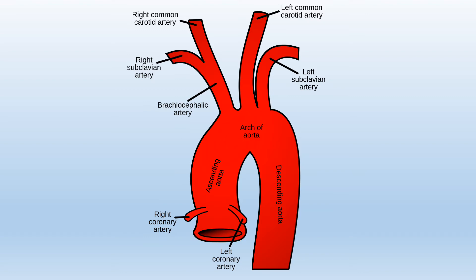The ascending aorta arises from the left ventricle and ascends to become the aortic arch. It is two inches long and travels with the pulmonary trunk in the pericardial sheath. The aorta gives its first branches right above the level of the aortic valve — the left and right coronary arteries — that supply oxygen-rich blood to the myocardium, the middle muscular layer of the heart.